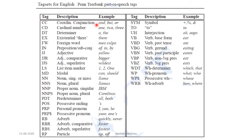This is the Penn Treebank part-of-speech tagset for the English language. This picture I have taken from Professor Dan Jurafsky's speech and language processing textbook. This tagset defines the parts of speech in the English language.